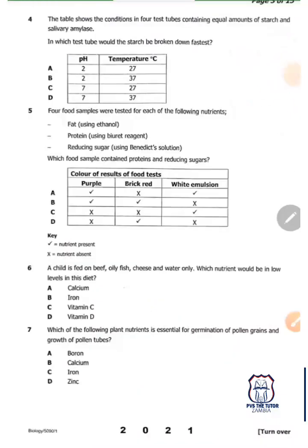Question four: The table shows the conditions in four test tubes containing starch and salivary amylase. In which test tube would the starch be broken down fastest? We know that enzymes work well when the temperature is optimum and when the pH is optimum. The optimum temperature most enzymes work best at is 37 degrees Celsius and the pH is 7. That gives us answer D.